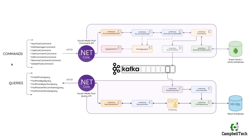The social media post query API, on the other hand, will be able to handle a find all posts query which will be used to return all social media posts, and the find post by ID query for returning a specific post using its unique ID.